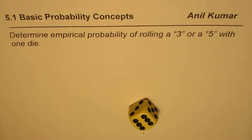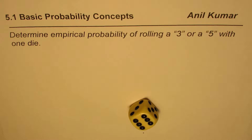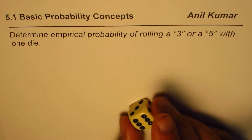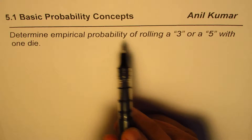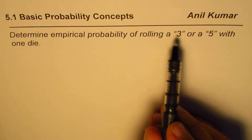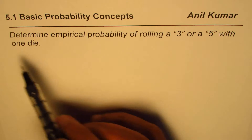I am Anil Kumar. We will discuss a few basic probability concepts with the help of this video. Let us start with a type of probability which we call empirical probability. It has other names such as experimental or relative frequency probability. The question here is: determine the empirical probability of rolling a 3 or a 5 with one die.